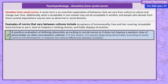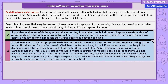When evaluating deviation from social norms, one positive aspect might be that it respects cultural differences between societies. It does not impose a set definition of abnormality that could, for example, impose a western view of abnormality on an eastern culture. Therefore it could be said that deviation from social norms is not ethnocentric. However, one issue is it can be difficult to apply when people from one culture move to a different culture with different norms. For example, people from an Afro-Caribbean background living in the UK are seven times more likely to be diagnosed with schizophrenia than people living in the UK from other backgrounds, or people from Afro-Caribbean nations living in Afro-Caribbean nations. This is due to something called category failure, where a western definition of mental illness is applied to individuals who are not acting according to western cultural norms. In Afro-Caribbean cultures, hallucinations and conversations with angels may be considered part of a normal religious experience, so a doctor in the West Indies would be less likely to diagnose schizophrenia based on these symptoms, whereas in the UK they may be more likely to do so.